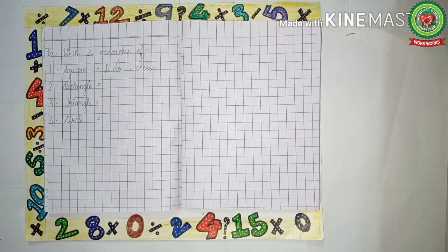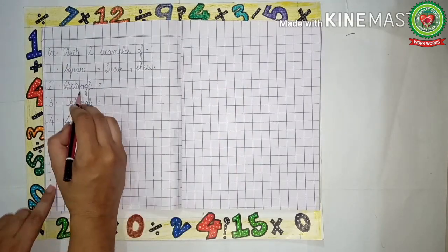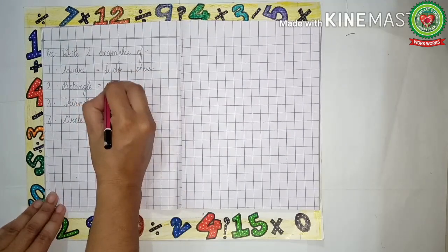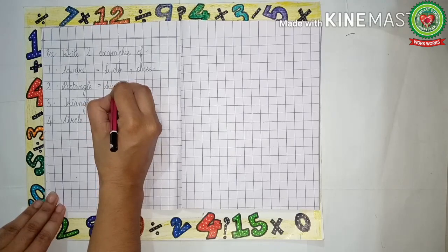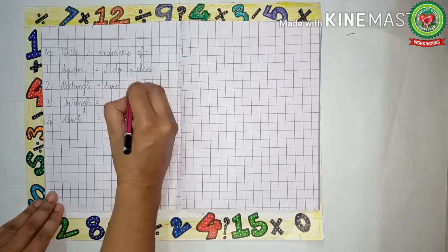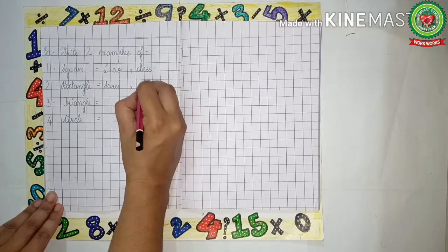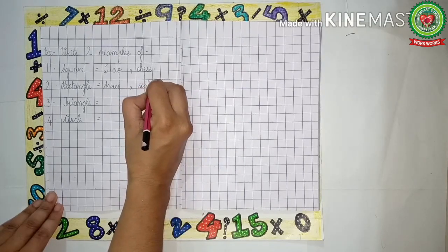Number two is rectangle. What are the two examples of rectangle? Sari — S-A-R-E-E — comma, scale — S-C-A-L-E.